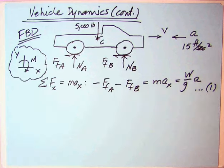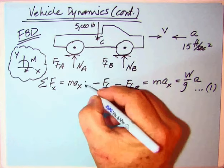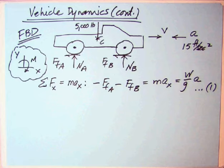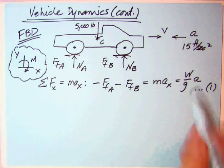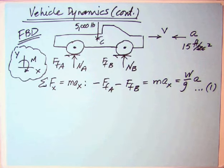Our first equation is sum of the force in X equals mass times acceleration in X. The only forces we've got in X are the friction forces: minus F_A minus F_B equals mass times acceleration in X. The mass is W over g, 5000 divided by 32.2, and then the acceleration - we make the accelerations in the positive direction, even though when we go to put it in later, we'll put in a minus 15 feet per second squared. So that's equation number one.